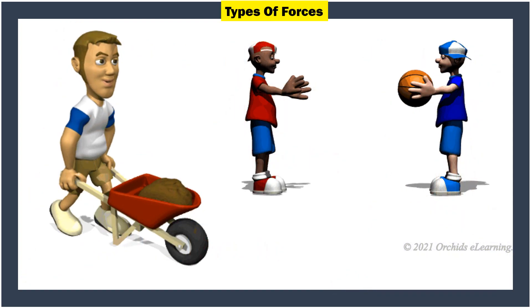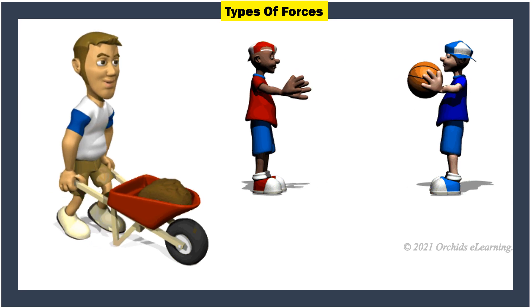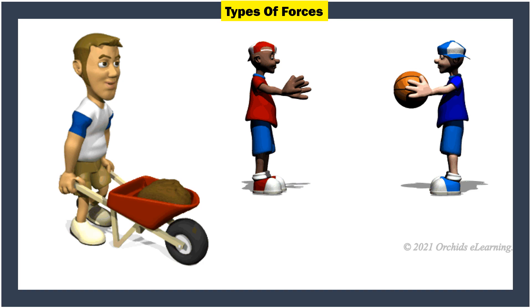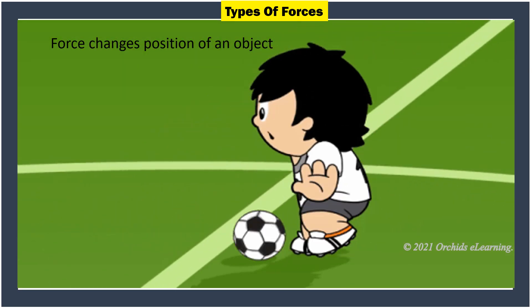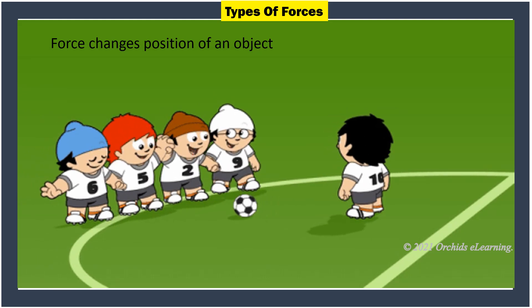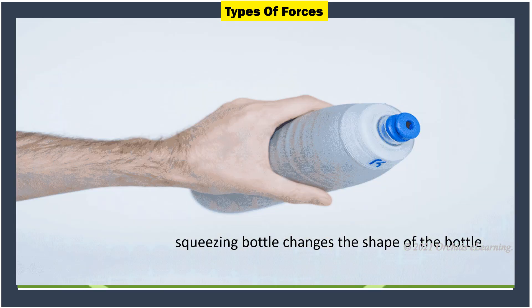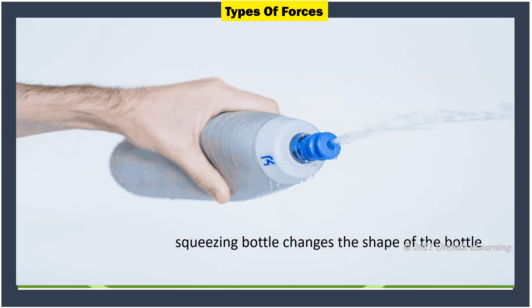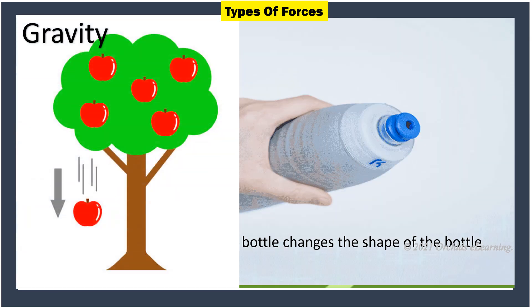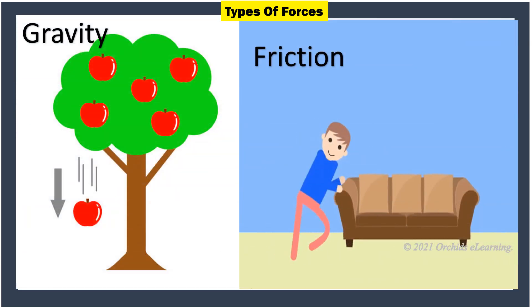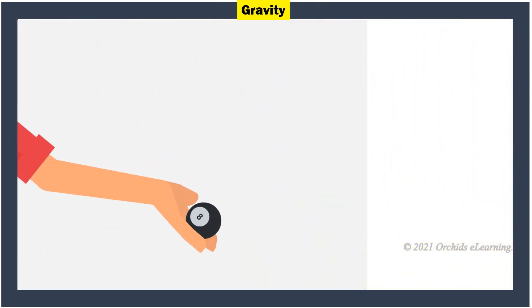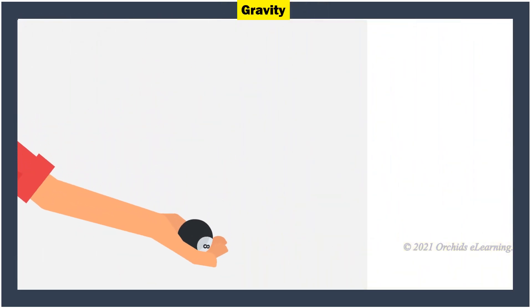Types of forces: Force may cause an object to stop or start, to change its position or direction of motion, to increase or decrease its speed, or to change the shape of the object. In nature there are two types of forces that are acting all the time, namely gravity and friction.